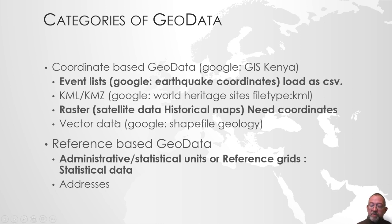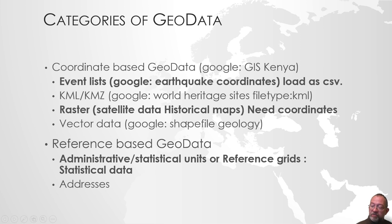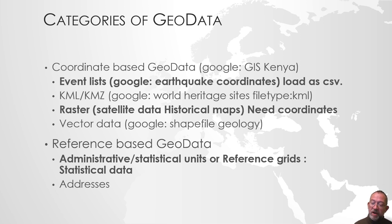Vector data I won't be covering — we have been using vector data all the time, so basically you just go out and find it. Here it might be a good idea to include the keyword 'shapefile' — type 'shapefile geology', for instance, to be specific that you want vector data. Most of the vector data lying around on the internet is in the shapefile format. Reference data is basically statistical units, administrative units, or reference grids, which are the ones we find statistical data on — and, as I mentioned, addresses.